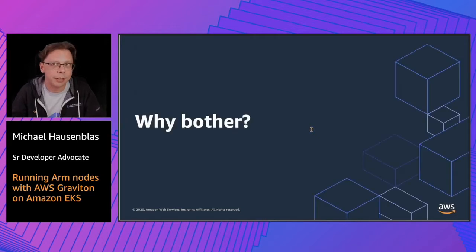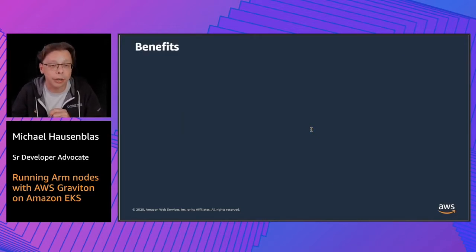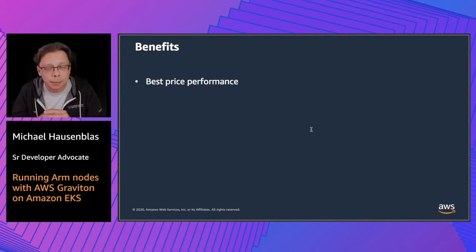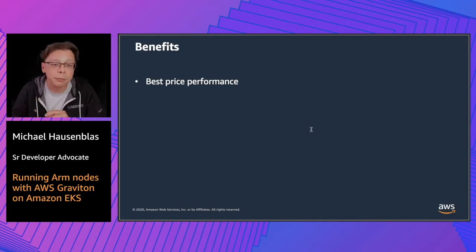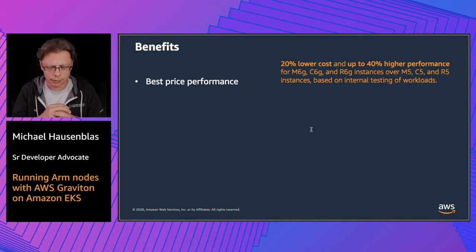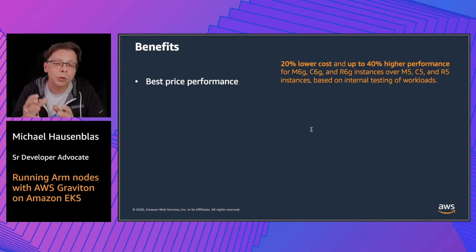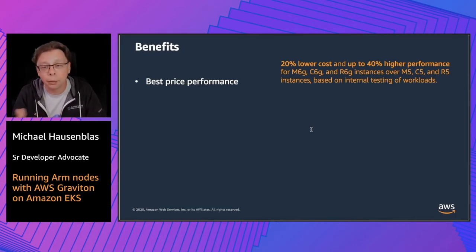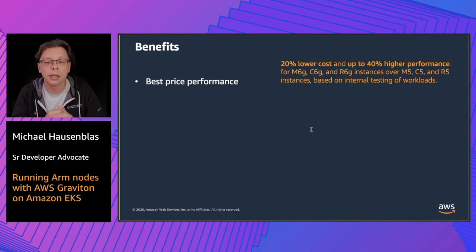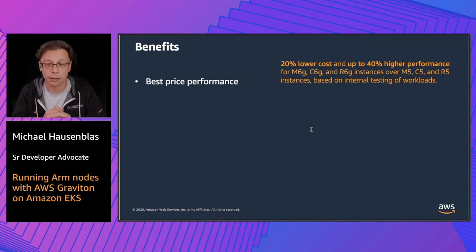So first things first, why should you bother? Why is that important? Well, the key benefit really is that you get the best price performance. We did some internal testing and found that you can get up to 20% lower costs and up to 40% higher performance for M6G, C6G and R6G instances over M5, C5 and R5.